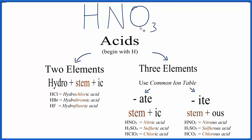So we have H, N, NO. That's three elements. So we use this side of the flowchart to write the name.